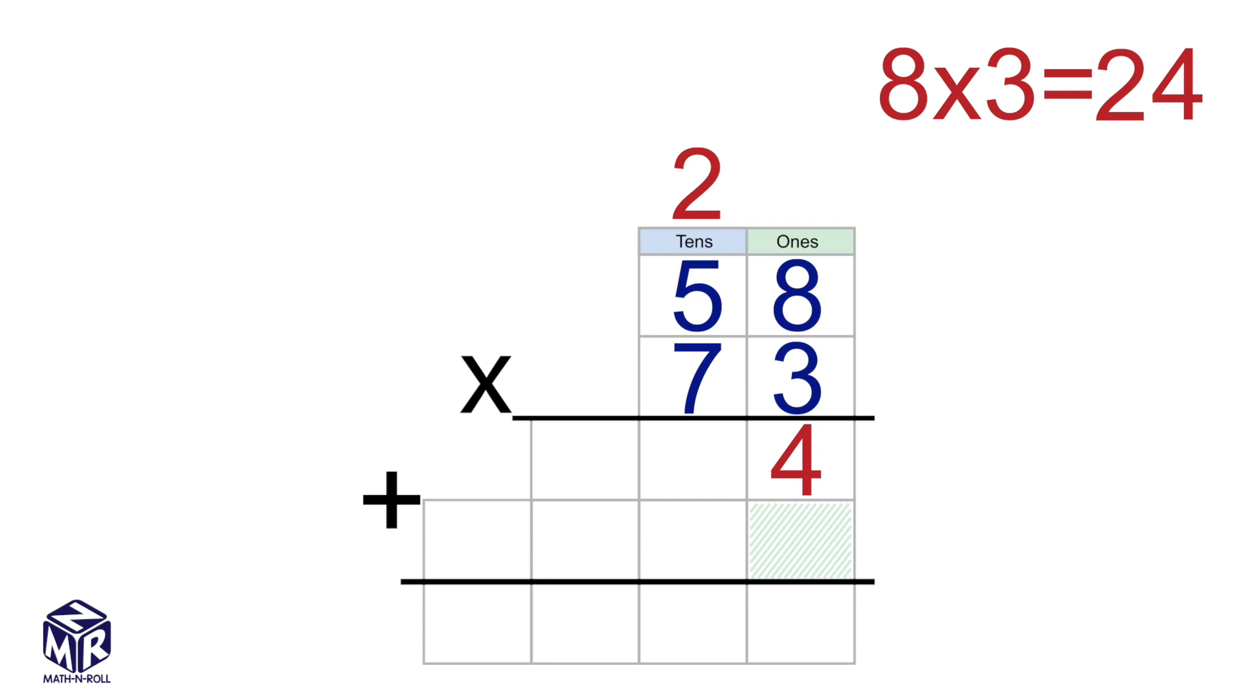Now, we multiply 5 times 3. 5 times 3 equals 15. We add our 2 and we get 17. We put the 7 in the tens place and the 1 in the hundreds place.